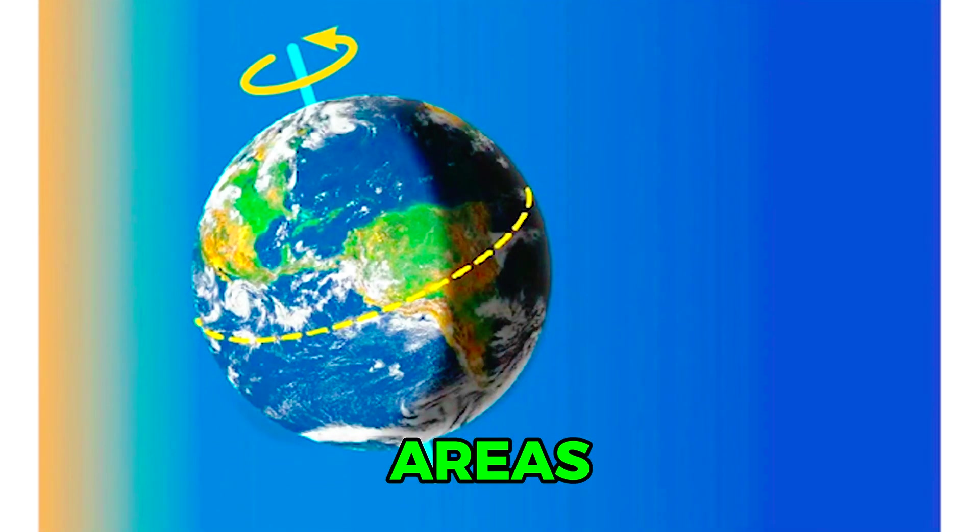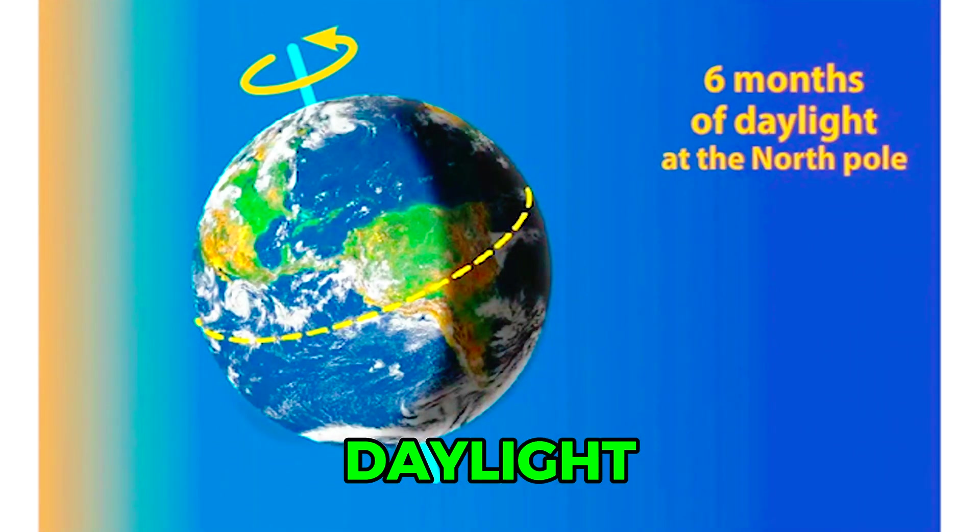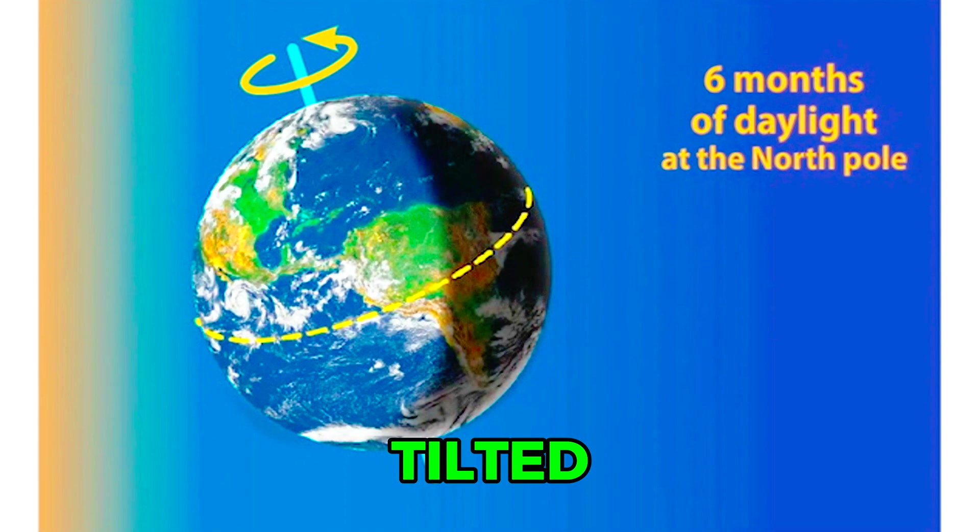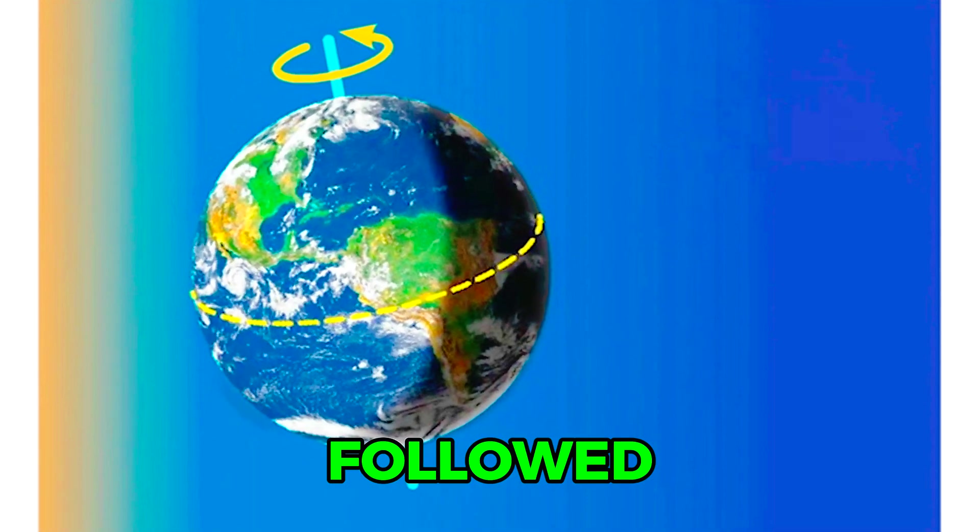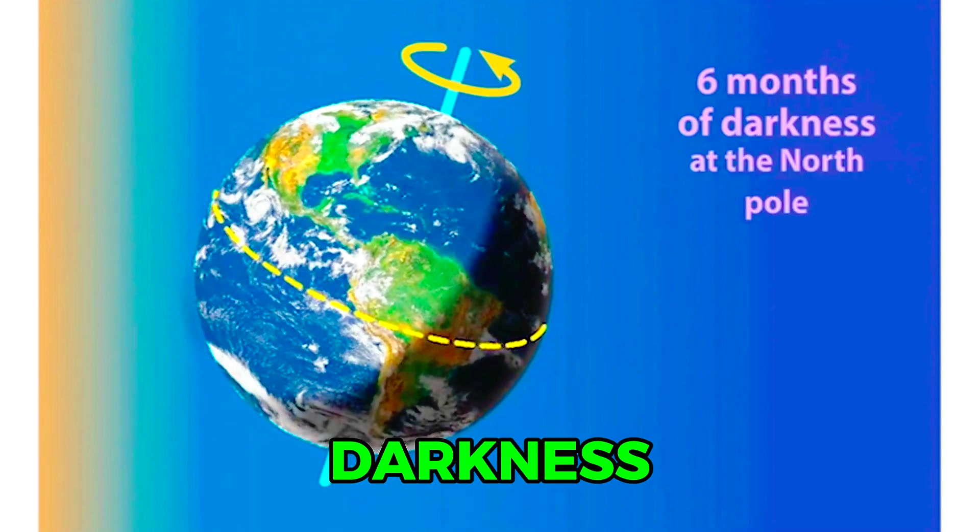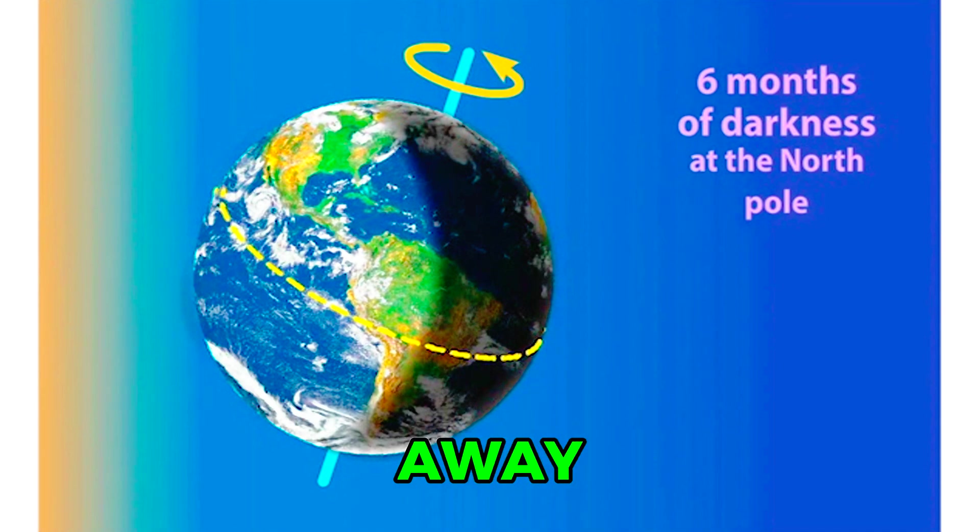Instead, these areas have six months of daylight when the Earth's pole is tilted toward the Sun, followed by six months of darkness when the pole is tilted away from the Sun.